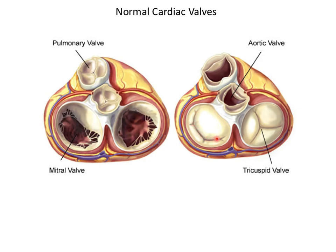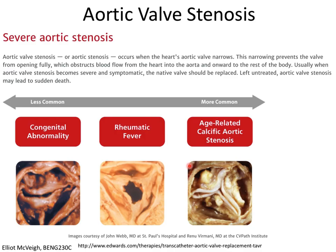The mitral valve has an interesting structure — the annulus is a saddle shape, making it difficult to model as a flat plane, which makes prosthesis design challenging. As you age, the aortic valve leaflets stiffen and can't move as well as when you're young. You'll often see calcifications growing on the leaflets that get in the way of normal function, and eventually you basically just have to take the whole thing out and put a new one in.